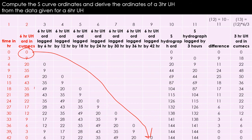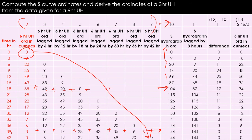Now we sum the values horizontally across all the lagged columns — from column 2 to column 9 — to get the 10th column, which gives the S-hydrograph ordinates: 0, 9, 20, 44, and so on. For example, 35 plus 49 plus 20 plus 0 equals 104, and 43 plus 35 plus 9 plus other values gives 144, and so on. This 10th column is our required S-hydrograph ordinates.